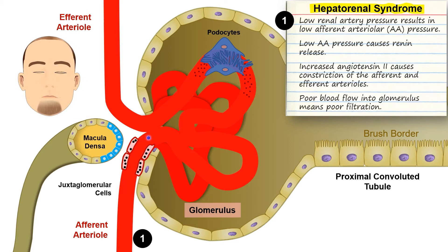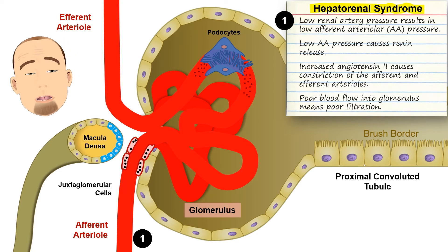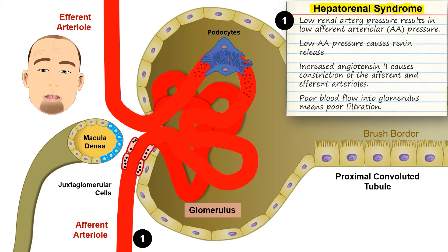That renin circulates — it won't get filtered through the glomerulus, so it continues to the efferent arteriole, back to the heart, and through the systemic bloodstream. In the lungs, through the pulmonary blood supply, renin ultimately produces angiotensin 2. Renin converts angiotensinogen into angiotensin 1, and angiotensin 1 is converted to angiotensin 2 by angiotensin-converting enzyme (ACE).